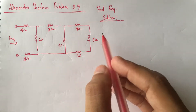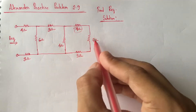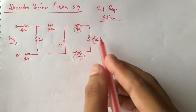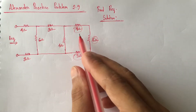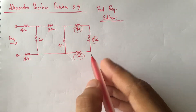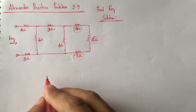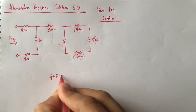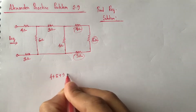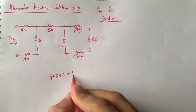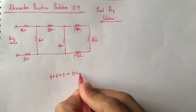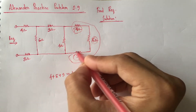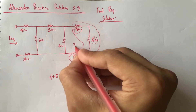From the circuit, we see that the 4 ohm resistance, 5 ohm resistance, and 3 ohm resistance are in series. So these 3 resistances will be added directly: 4 + 5 + 3 ohm, which can be replaced by a resistance of 12 ohm. So the equivalent resistance of this part is 12 ohm.